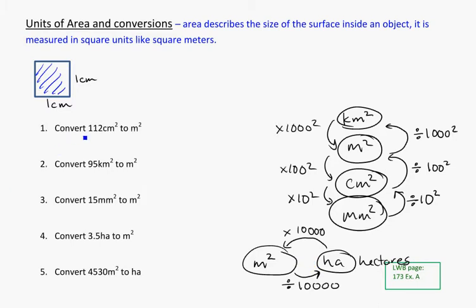So looking at a few of these, let's convert 112 centimeters squared into meters squared. From centimeters squared up to meters squared, that's dividing by 100 squared. So that's 112 divided by 100 squared. In your calculator you should get 0.012 meters squared.